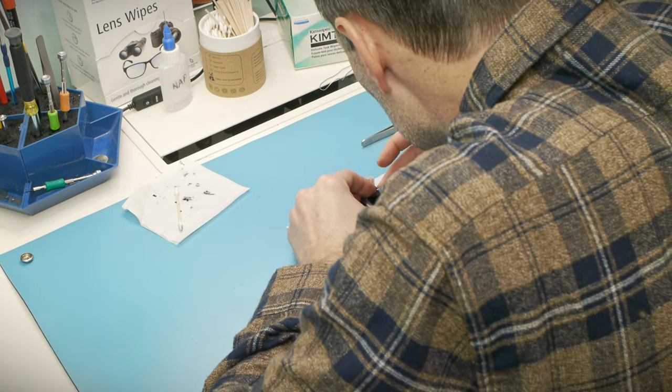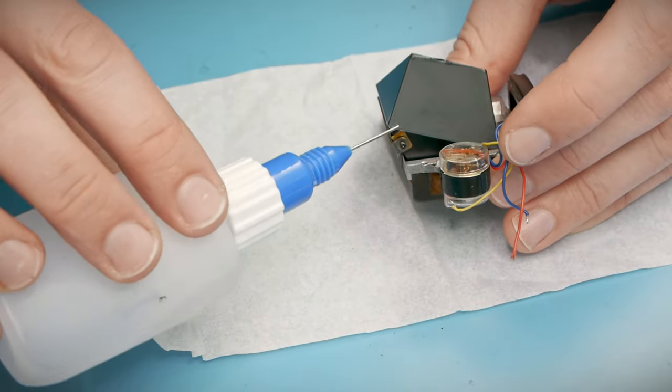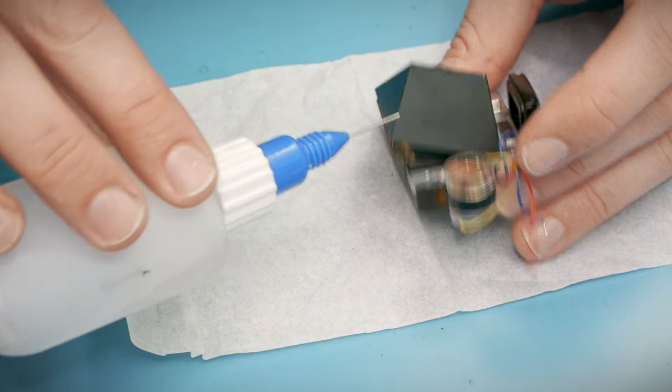But man, this thing does not want to come out. I think some of the threadlocker on the screws has made a bond with the bracket. I'll use some alcohol to soften this up as well.